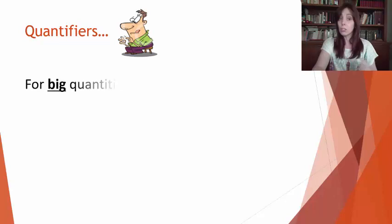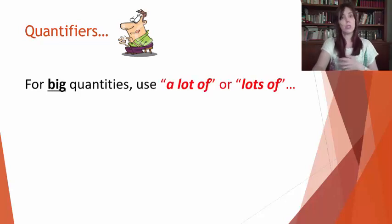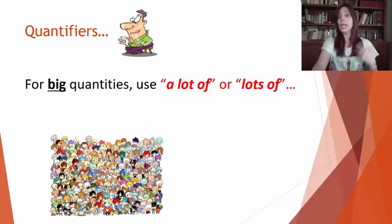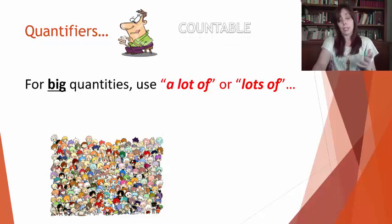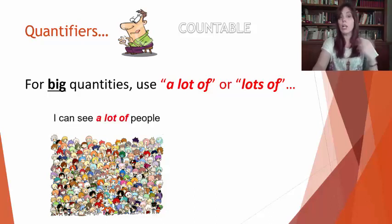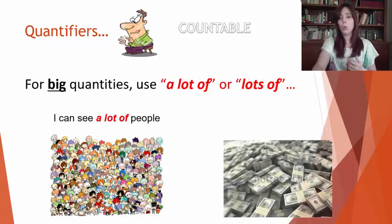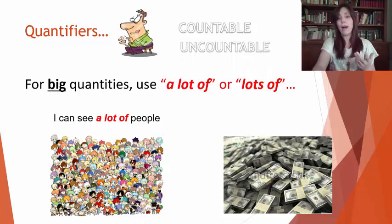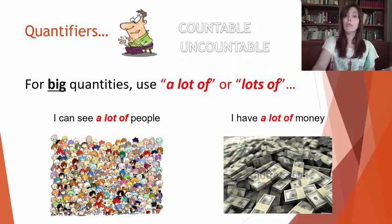So let's concentrate on the quantifiers. If you want to express a big quantity, the common one is a lot or lots of. They are synonyms. You can see, this is for countable nouns. You can see a lot of people. Or you have a lot of money. It doesn't matter. You use a lot of for countable and uncountables. Nice.